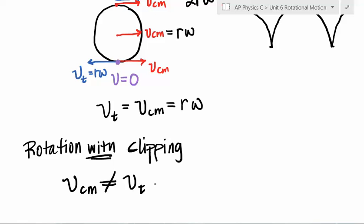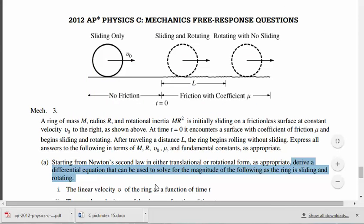Now, with that said, let's look at this question from 2012, because it's not as scary as it seems maybe to begin with. So you've got this hoop, and it is sliding only. So what can you tell me about the velocity at the top, middle, and bottom? They would all be v naught. Then we hit this rough patch, where it goes from sliding, but there has to be a transition. You can't just instantaneously start rolling.